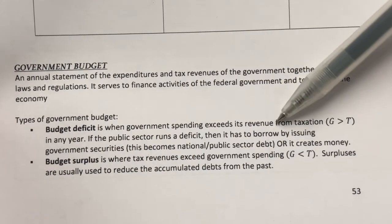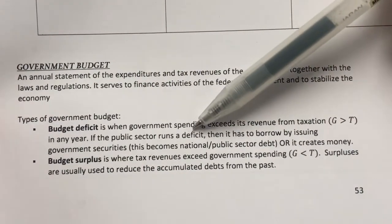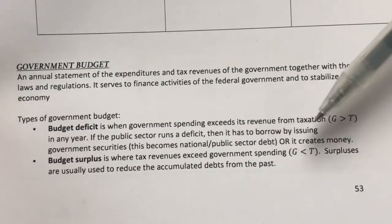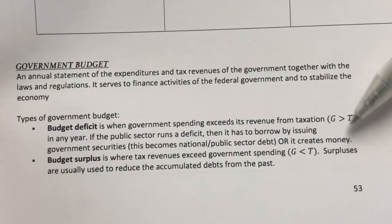One way is for the government to borrow by issuing government securities. So this will basically become our national or public debt. Another alternative is for the government to create money. We will learn more about this creating money in the next topic.